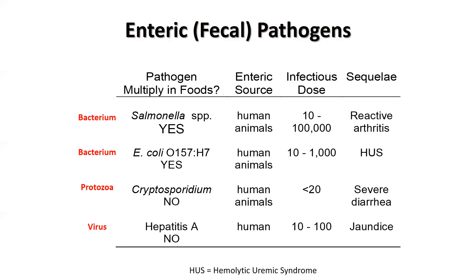Cryptosporidium, a parasite, comes from humans and animals and has an infectious dose of less than 20 oocysts. It can lead to severe long-term diarrhea in patients because it causes such severe damage to the intestinal tract. Hepatitis A virus comes from human sources and has an infectious dose of 10 to 100 viral particles. It can lead to jaundice that lasts weeks to months, though it does not cause chronic infection like hepatitis C virus.